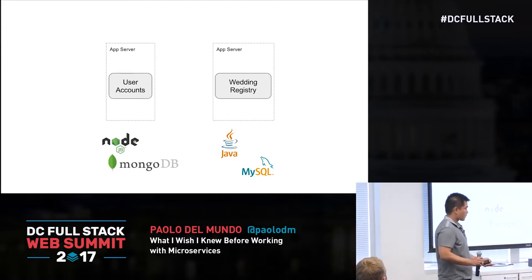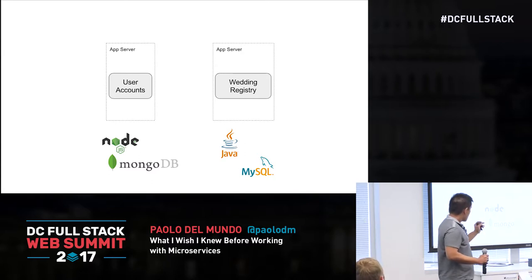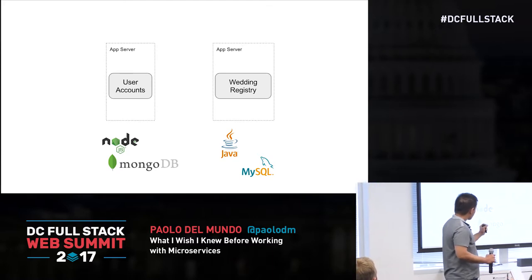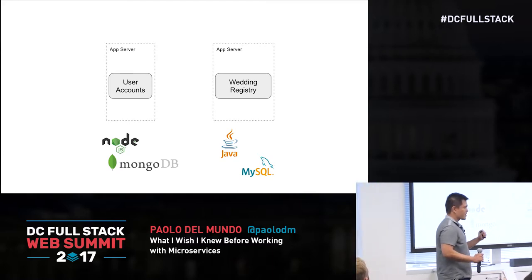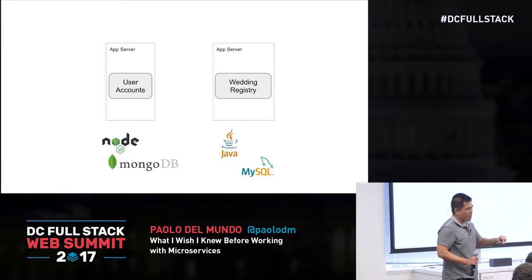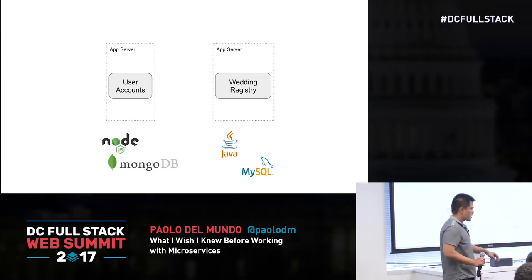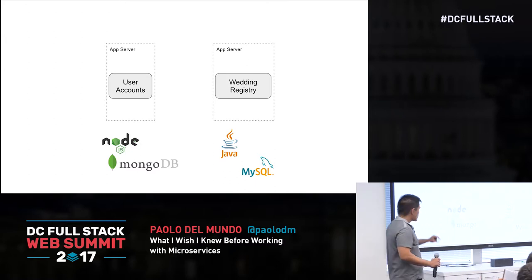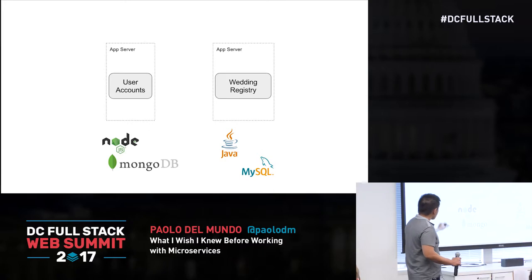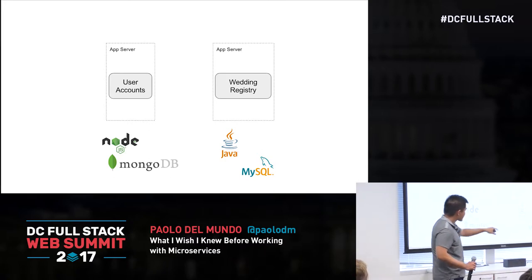Our team was a Node.js team — we really loved JavaScript. We didn't want any Java, even though Opower was mainly based on Java. Because we were using microservices, we could choose the technologies that we want, as long as we maintain the same contract as the other services are using.